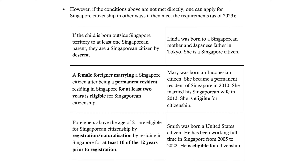As of 2023, there are ways that somebody who is not born a citizen can apply for Singapore citizenship. If you're born outside Singapore territory to at least one Singaporean parent and you register your birth, you will be a Singapore citizen. A female foreigner marrying a Singapore citizen — after being a PR for at least two years — is eligible for Singapore citizenship, though not automatically. You still have to go through the application process. It is a two-step process: first you must be a PR, and then you can apply for citizenship.